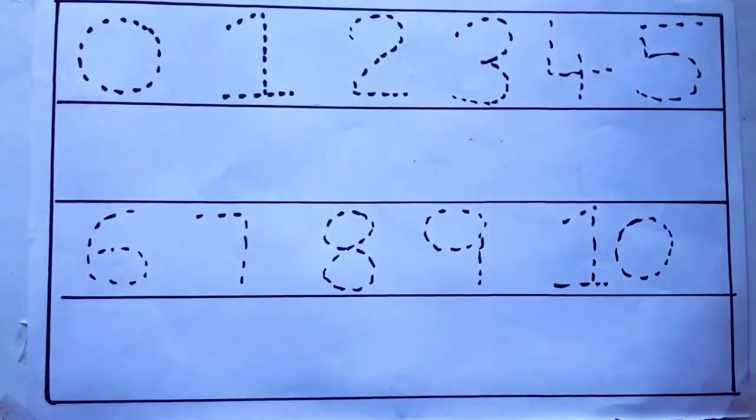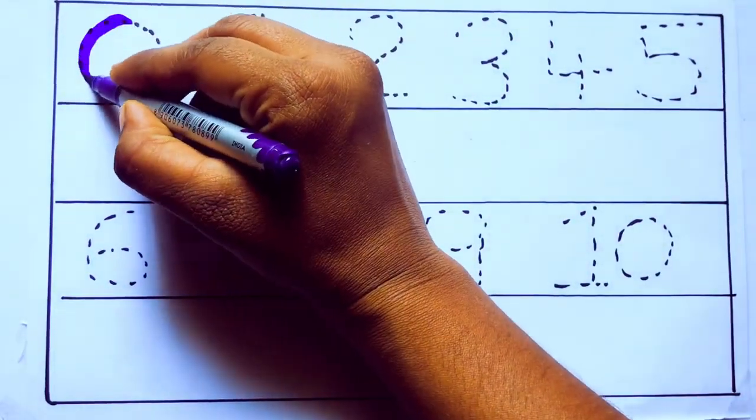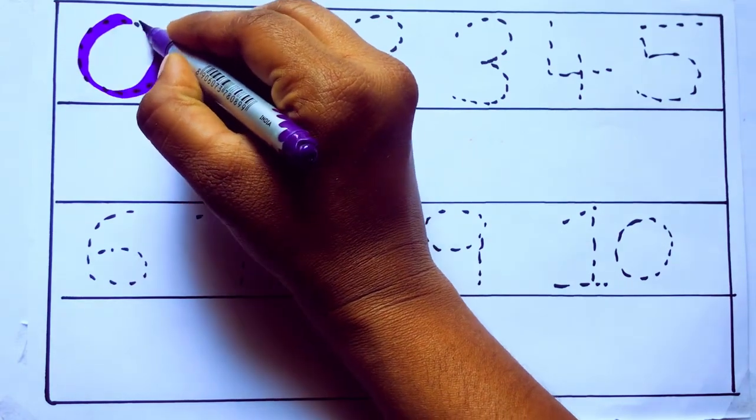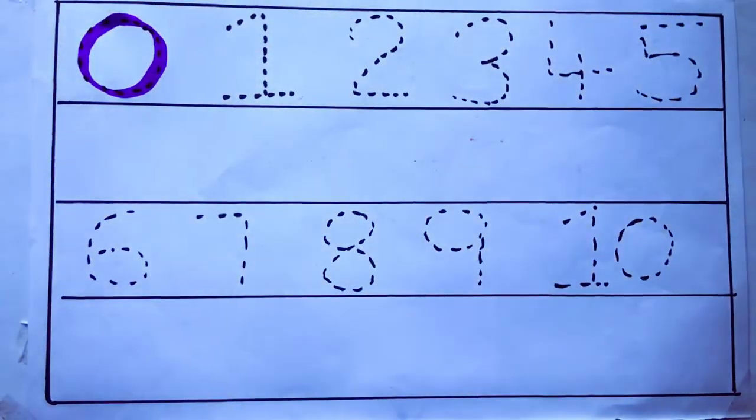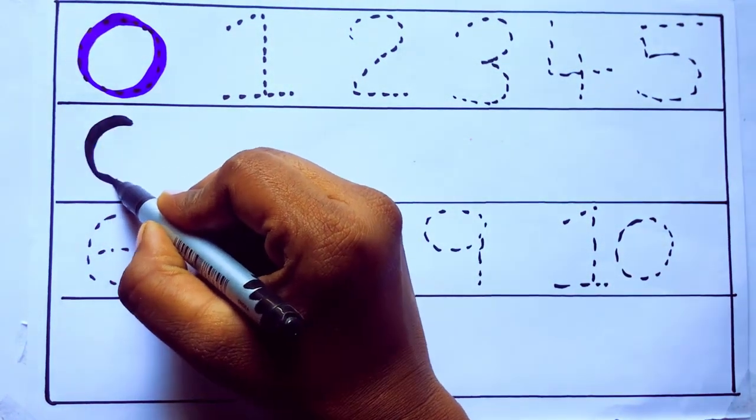Let's draw numbers. Violet color 0, Z-E-R-O. 0, 0.